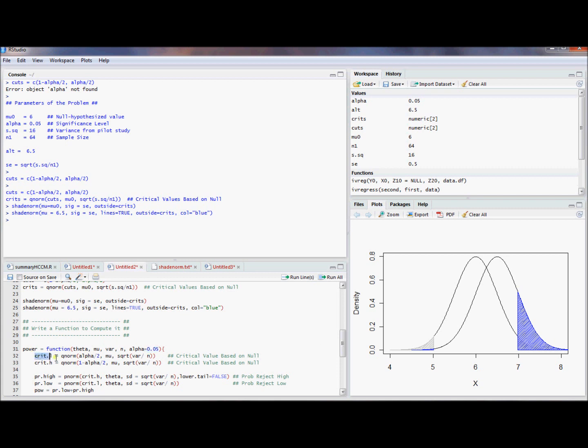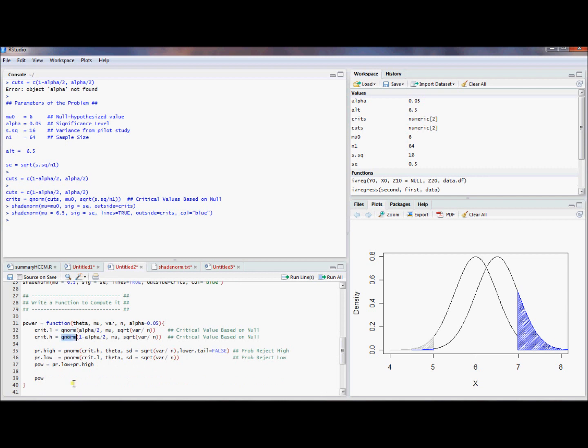So the first part that we'll do is we'll compute the critical values, the lower critical value and the upper critical value. We did that using qNorm, so that gives us normal critical values. Then what we'll do is we'll use the pNorm command to compute the probability we reject when we're in the upper tail. So this prHigh corresponds to this region right here. It's an actual number that corresponds to that.